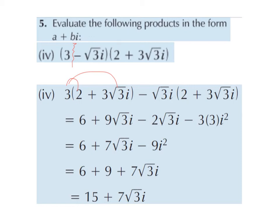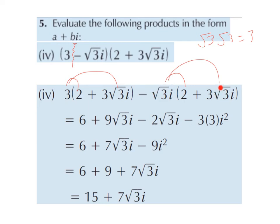Minus root 3i multiplied by 2 gives minus 2 root 3i. Treating root 3i like an x: minus x multiplied by 2 gives minus 2x, so minus root 3i multiplied by 2 gives minus 2 root 3i. Then minus root 3i multiplied by 3 root 3i gives minus 3 times 3i squared, using the rule that root x multiplied by root x gives x. So root 3 multiplied by root 3 gives 3; a minus by plus gives minus; and i multiplied by i gives i squared.